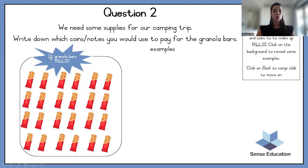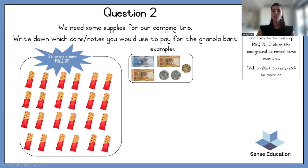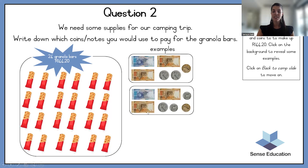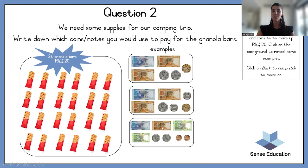We have 24 granola bars — they are 144 rand 20. What ways could we break up this? Write down a few ways to break up 144 rand 20. Some examples: 100 rand, 20 rand, 20 rand, 20 rand, 2 rand, 1 rand, 1 rand, and 20 cents. Or: 100 rand, 20 rand, 10 rand, 10 rand, 2 rand, 2 rand, 10 cents, and 10 cents.